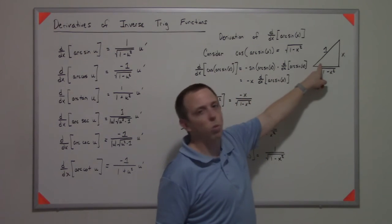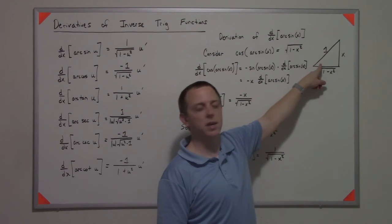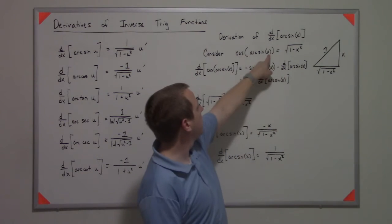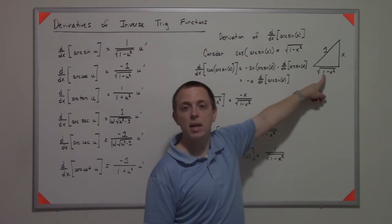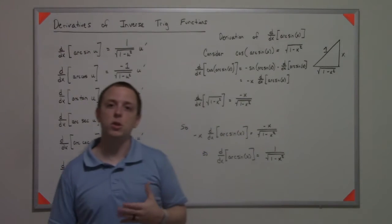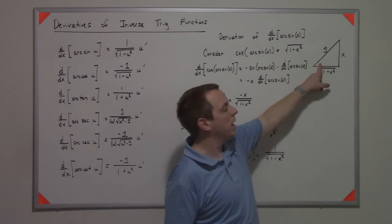We know that if this was like a y, then sine of y equals x. So opposite over hypotenuse is x. If we solve the remaining leg of the triangle, we get the square root of 1 minus x squared.